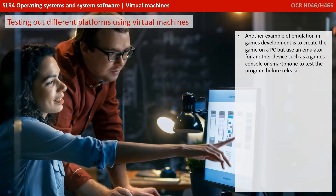Another example of emulation in games development is to create the game on a PC, but use an emulator for another device, such as a games console or smartphone, to test the program on those platforms before release.